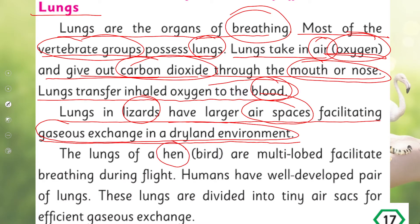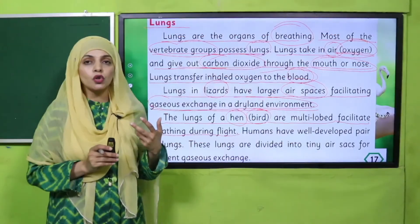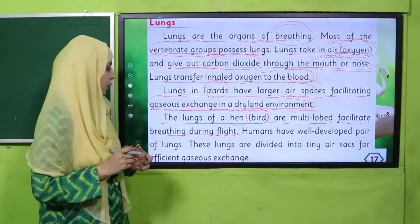Now let's talk about the lungs of a hen or birds. The lungs of birds are multi-lobed, facilitating breathing during flight. So birds have multi-lobed lungs — they have multiple lobes — which we will discuss further. Their structure helps them breathe efficiently while flying.